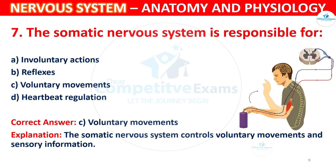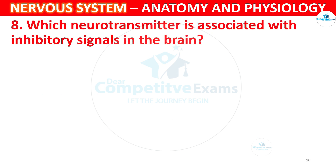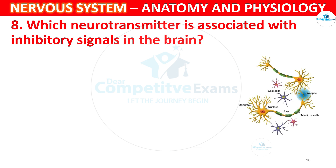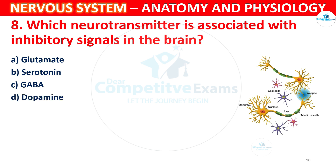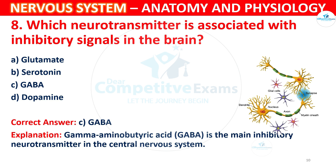Question 8: Which neurotransmitter is associated with inhibitory signals in the brain? Options: A) Glutamate, B) Serotonin, C) GABA, D) Dopamine. The correct answer is C, GABA. Gamma-aminobutyric acid (GABA) is the main inhibitory neurotransmitter in the central nervous system.